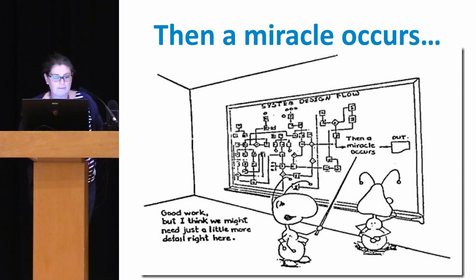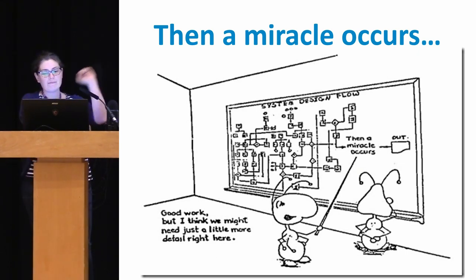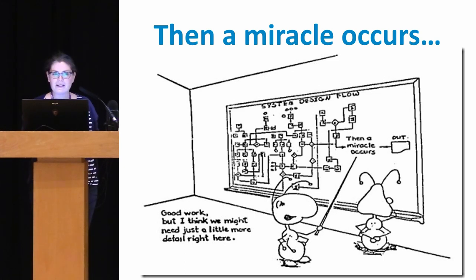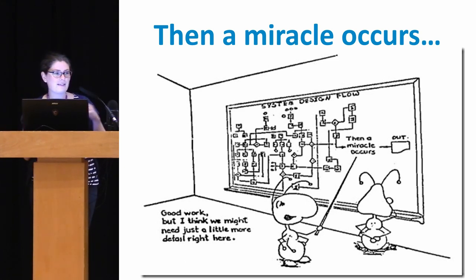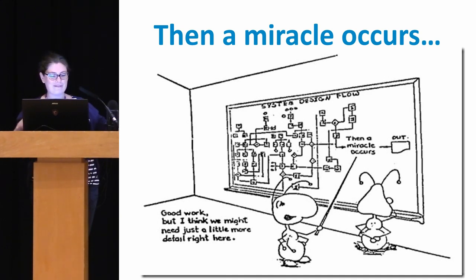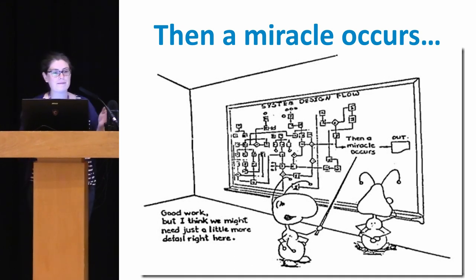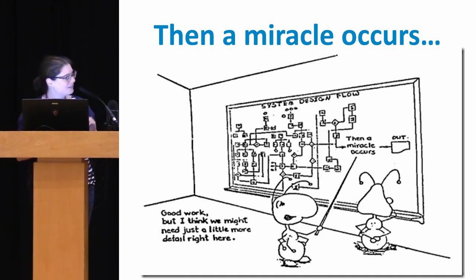Theory of Change addresses something we often encounter on projects: we kind of know what we're doing and have an idea of what we'd like to achieve, but there's a fuzzy bit in the middle — this 'then a miracle occurs' moment where we don't quite know how we get from one thing to the other. The hope is that Theory of Change puts the detail in that middle part.